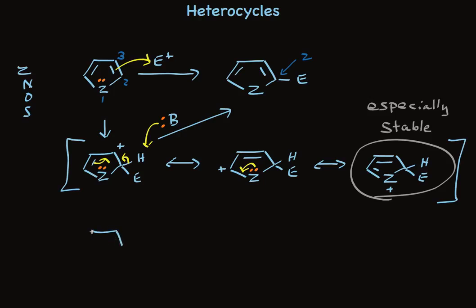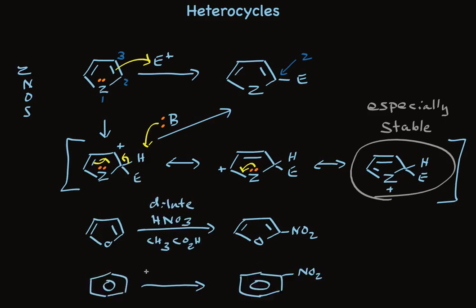Furan, that's the oxygen aromatic heterocycle, undergoes electrophilic aromatic substitution to replace hydrogen by NO2. This reaction can be done with dilute nitric acid using acetic acid as solvent. By way of contrast, take a look at benzene. To accomplish nitration, we need to use concentrated nitric acid, concentrated sulfuric acid, and heat. Just to be clear and accurate, I should put an H along with this nitrogen.